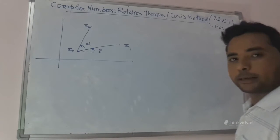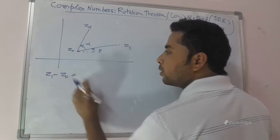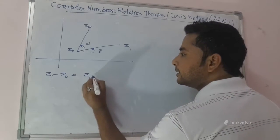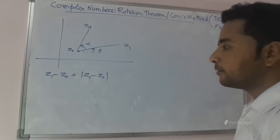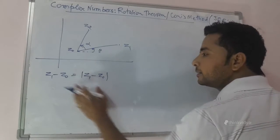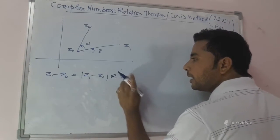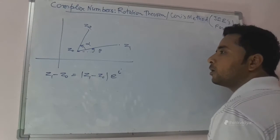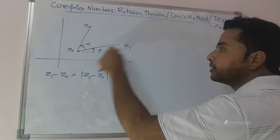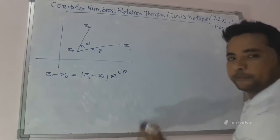If Z1 is a complex number and Z0 is also a complex number, then Z1 minus Z0 will also be a complex number, the magnitude of which will simply be |Z1 minus Z0|. If I use the polar form using the Euler formula, then Z1 minus Z0 can be written as the magnitude times e raised to the power iota times its argument. From the diagram, you can see clearly that the argument of this complex number, which represents this line segment, is just theta.